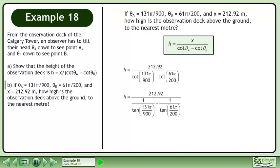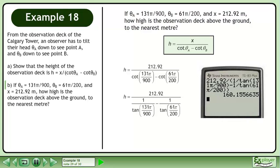We write all of the cotangents as one over tangent. Use your calculator to evaluate the expression. The observation deck is approximately 160 meters above the ground.